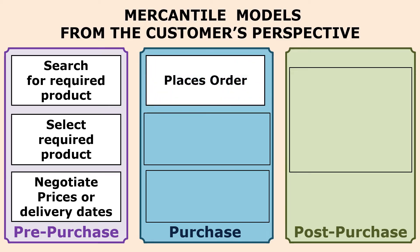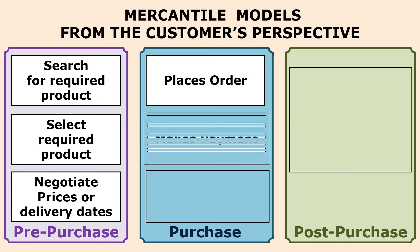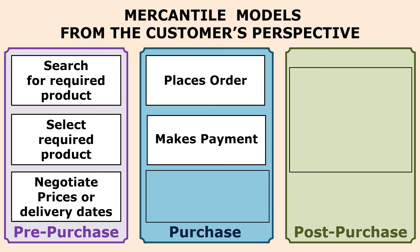Based on price and delivery date, people select the required product, completing the pre-purchase process. Now in the purchase phase, after selecting the required products, the customer proceeds to place an order. All items are added to the shopping cart, which is software that counts the number of products, notes the price of each product, and calculates the total amount payable.